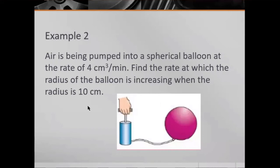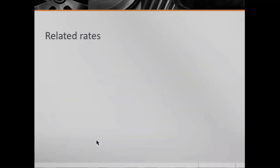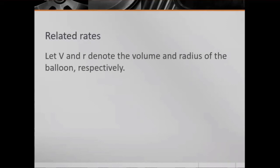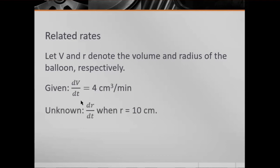For example two: Air is being pumped into a spherical balloon at the rate of 4 cubic centimeters per minute. Find the rate at which the radius of the balloon is increasing when the radius is 10 centimeters. Here is our illustration. Let V and r denote the volume and radius of the balloon respectively. The given is dV/dt = 4 cm³/min, and our target is dr/dt when r = 10 cm.